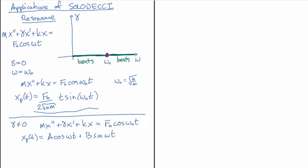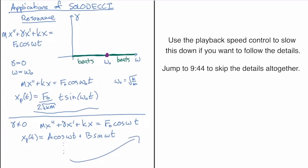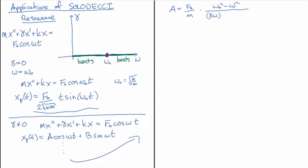When we plug that ansatz back into the equation, we find that the coefficient a equals f naught over m times (omega naught squared minus omega squared), all divided by (gamma omega)² plus (omega naught squared minus omega squared)², and b equals f naught over m times gamma omega, all divided by (gamma omega)² plus (omega naught squared minus omega squared)². That gives us our particular solution xp. The amplitude of xp is going to be given by the square root of a squared plus b squared.